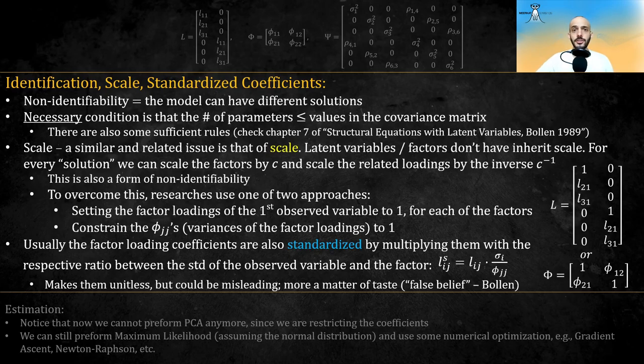Another issue which is related is the issue of scale. Latent factors don't have inherent scale. For every solution, we can scale the factors and scale the related loadings by the inverse. This is also a form of non-identifiability, and to overcome this, researchers use one of two approaches. Either setting the factor loadings to the first observed variable to 1 for each of the factors, or constraining the phis, the variances of the factor loadings, to be 1. Usually, the factor loading coefficients are also standardized by multiplying them with the respective ratio between the standard deviation of the observed variable and the factor. This makes them unitless, but could also be misleading. Bollen mentioned that one of the false beliefs about CFA is that it only deals with standardized coefficients, but it's not really the case. So, using standardized coefficients is more of a personal taste than a necessity.